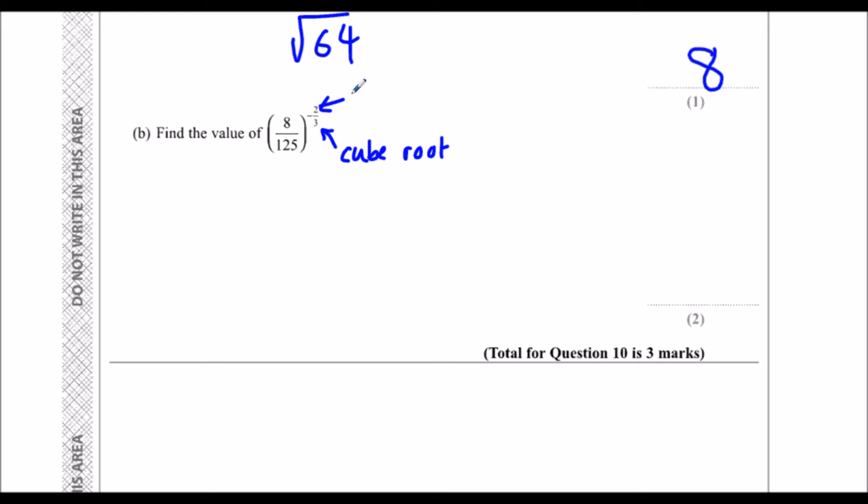The 2 is a square, so we've got to square it, cube root it, and the minus means flip. We're going to do those three things. It doesn't matter what order we do them in.